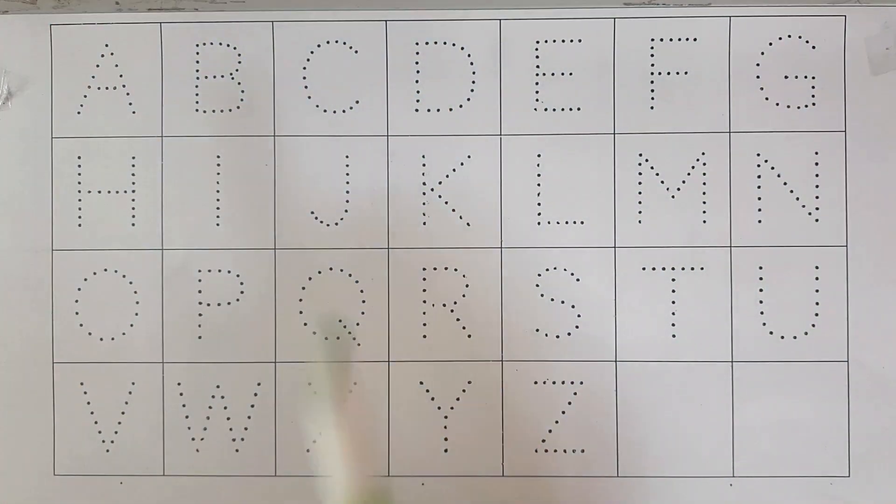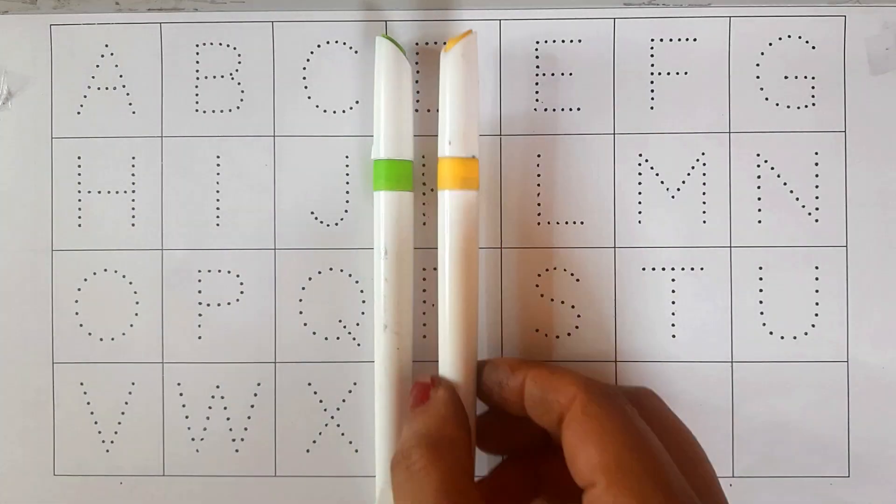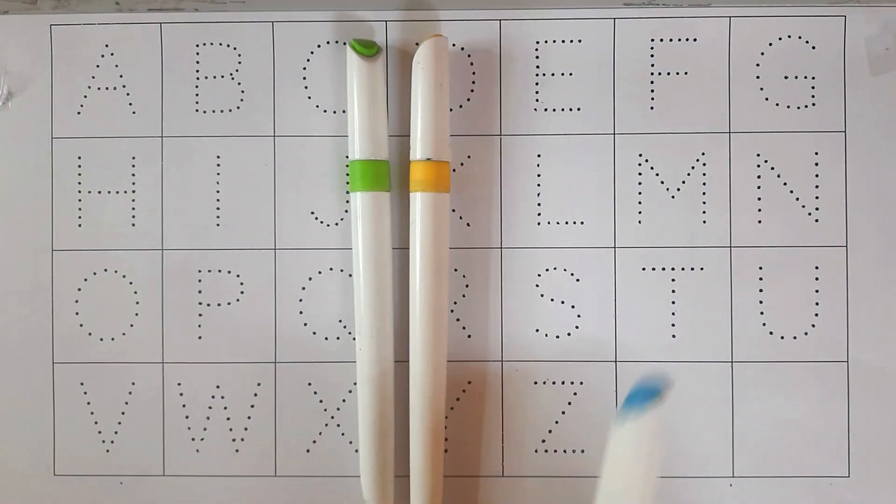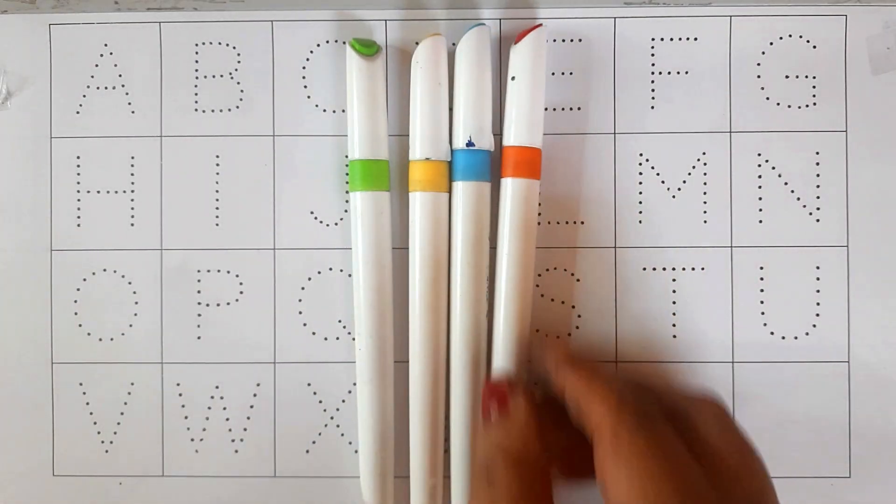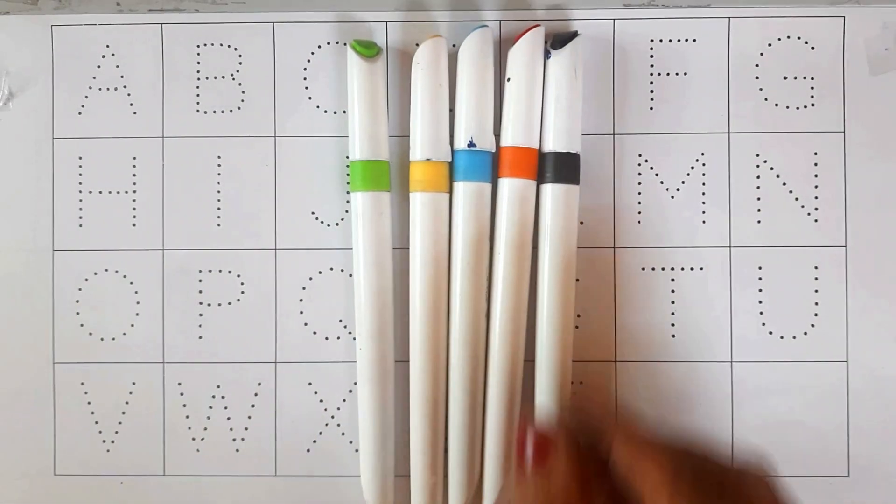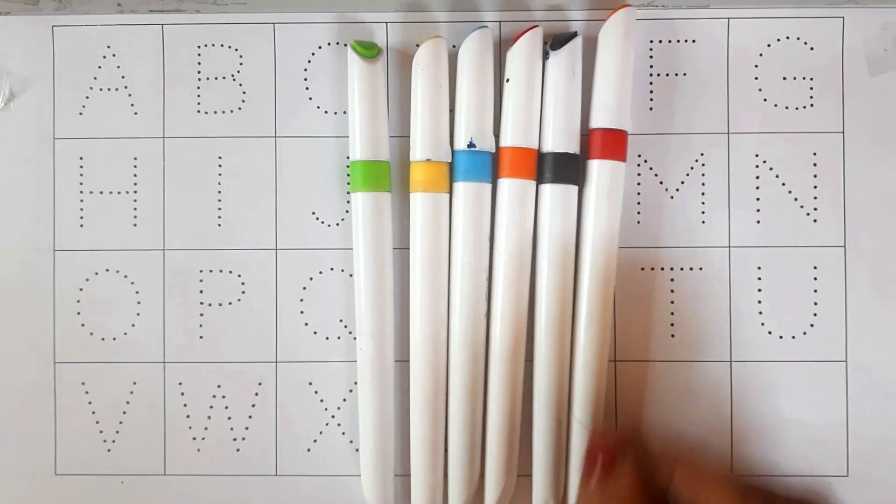Color names: Green, Yellow, Sky Blue, Orange, Black, Red.